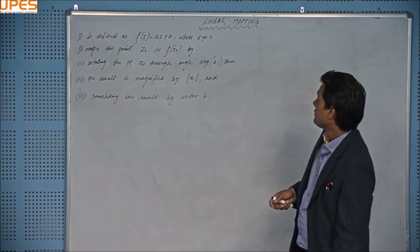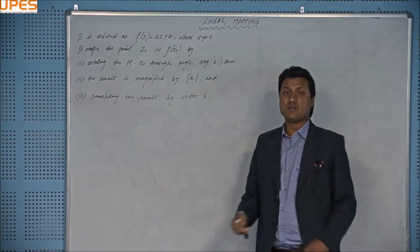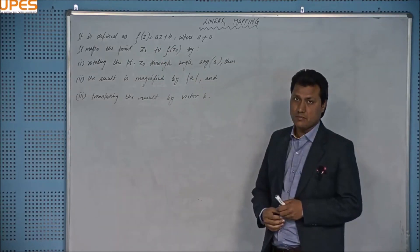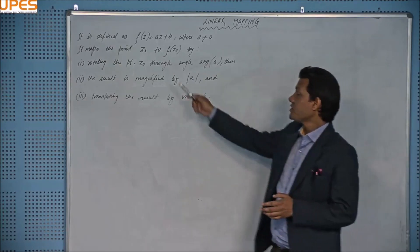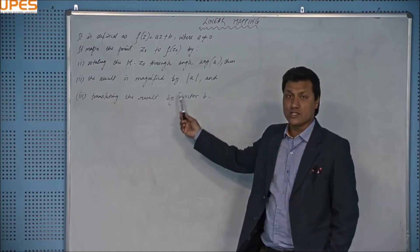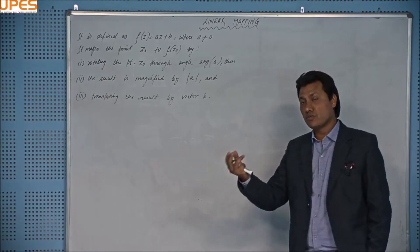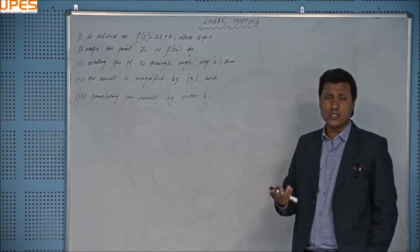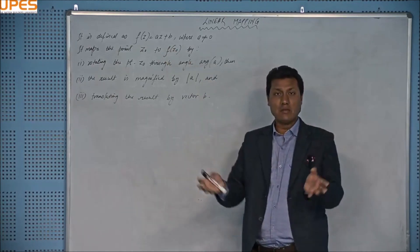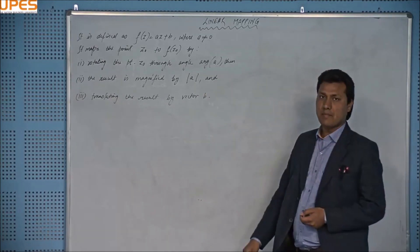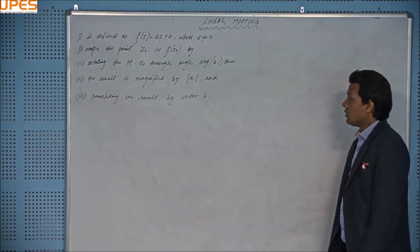If we take a = 0, which I have excluded by requiring a ≠ 0, the mapping reduces to a constant mapping f(z) = b, meaning every point maps to the single point b. In that case there is no rotation, no magnification in the usual sense, and the entire domain shrinks to a single point. That is a special case of linear mapping, which is why we define it with a ≠ 0 to see meaningful differences.